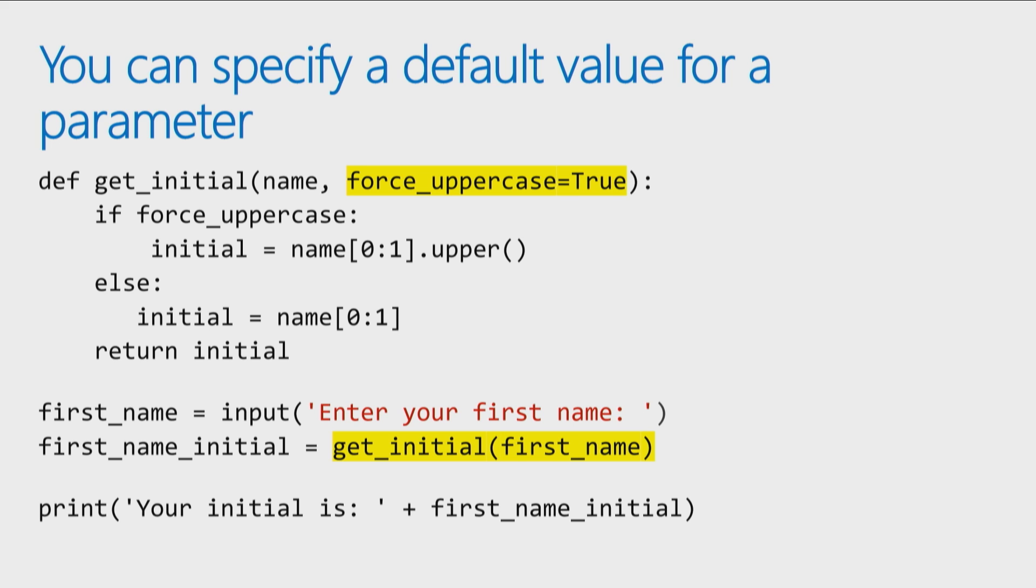One of the things we can do is we can specify a default value for our parameter. Now what's neat about this is I might say most of the time you probably want me to always return initials in uppercase. So what I'm going to do is say that the forceUppercase is defaulting to true. So what that means is if you don't give me a value for forceUppercase, I'm always going to say true for forceUppercase.